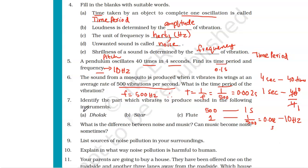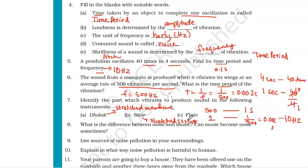Question number seven: identify the part which vibrates to produce sound in the following instruments. In the dhol, it is the stretched membrane. In the sitar, it is the stretched string. In the flute, it is a wind instrument and the air column vibrates to produce sound — vibration of the air column.